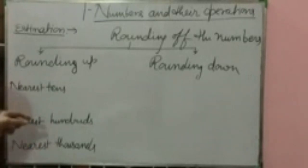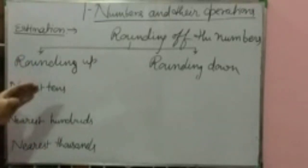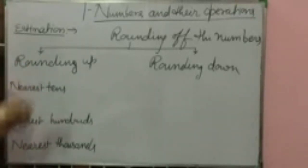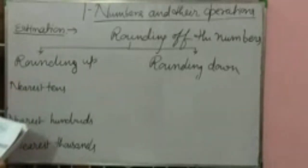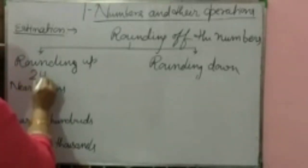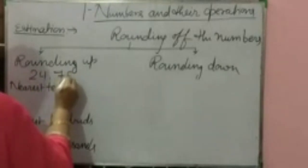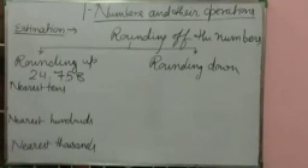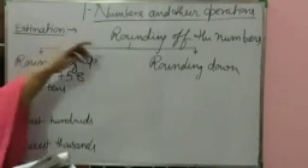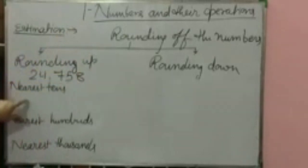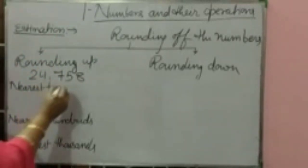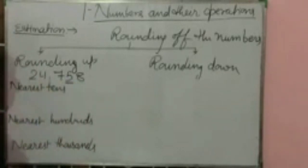If the digit at the 1, 10, or 100 place is 5, 6, 7, 8, or 9, then the number is rounded up. Suppose the given number is 24,758. The question says: round off to the nearest tens. For nearest tens, underline the digit which is in the tens place — that is 5.